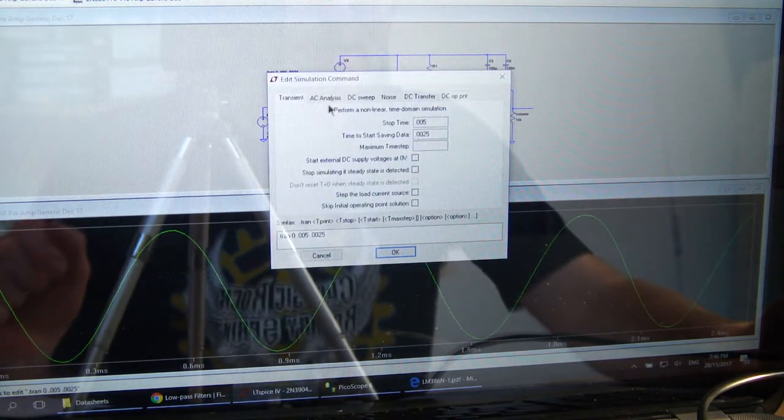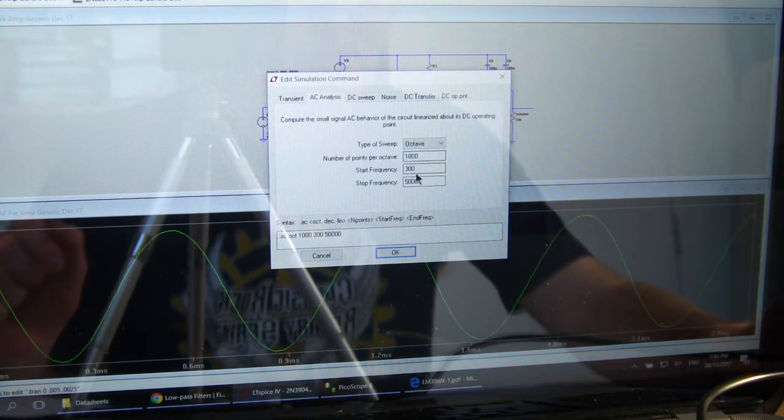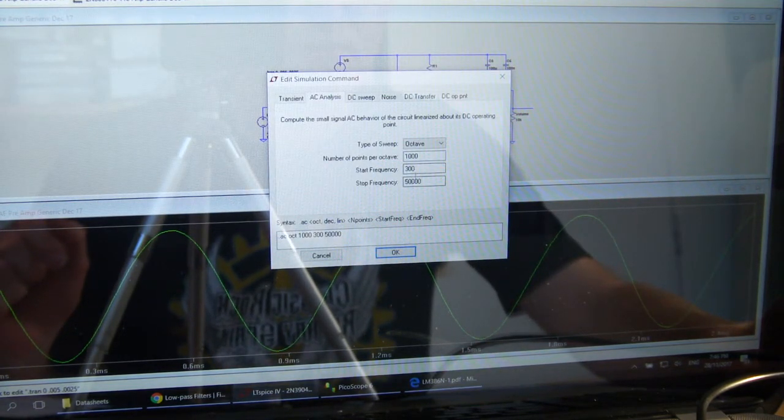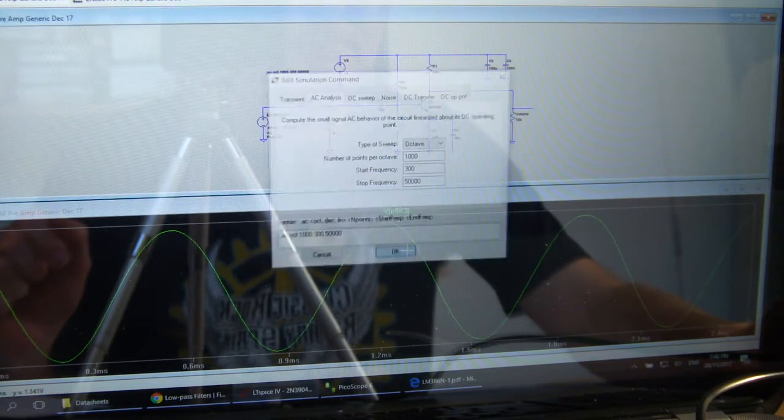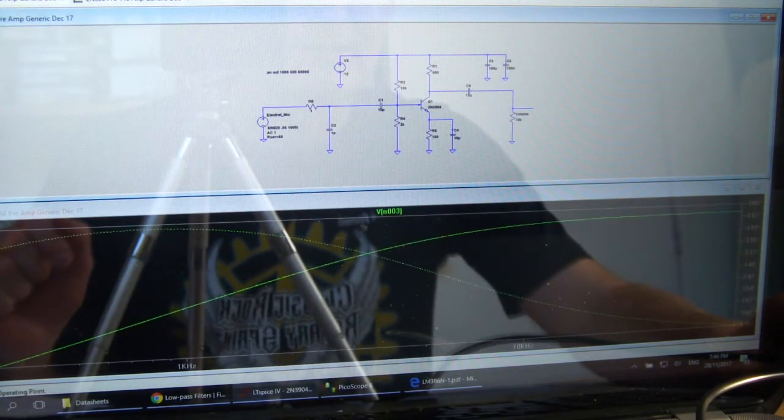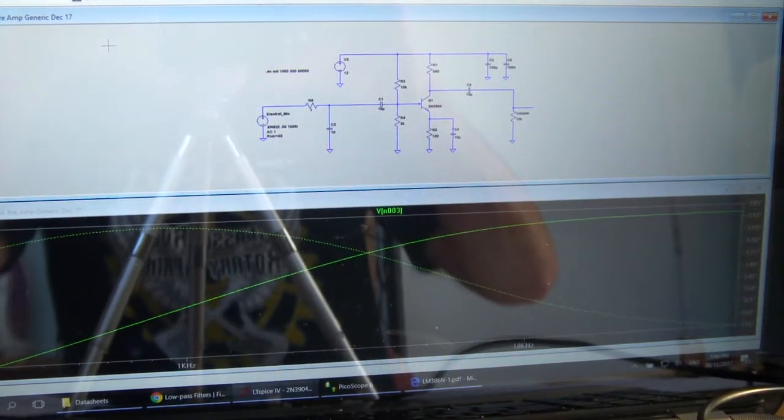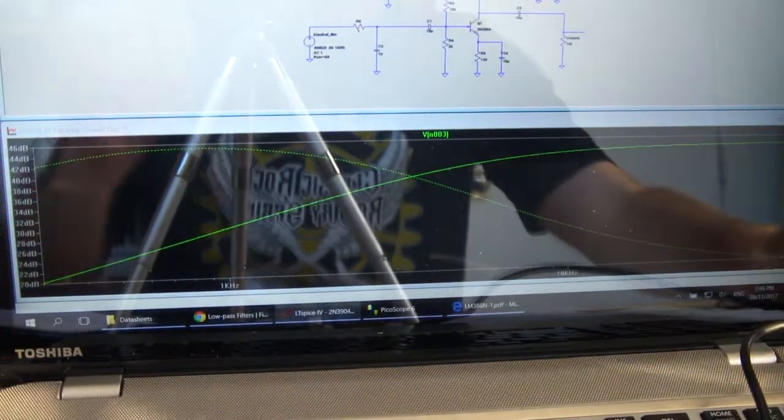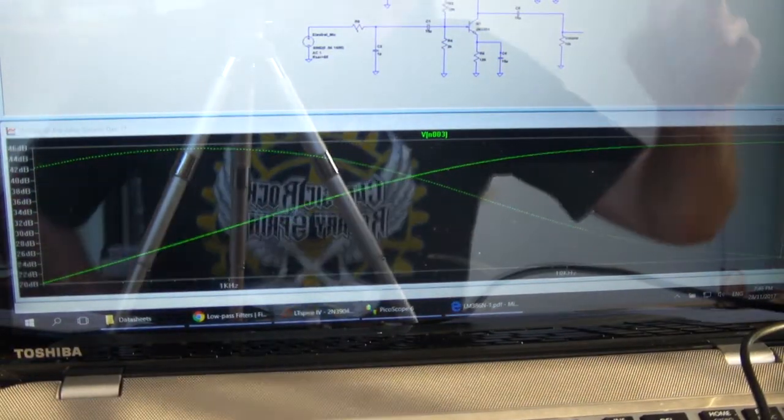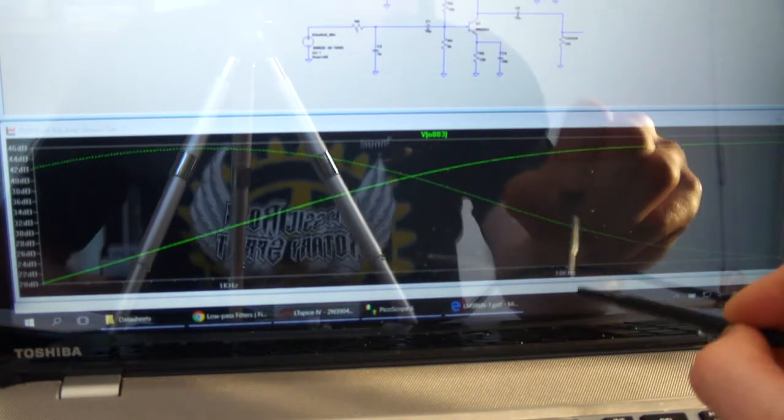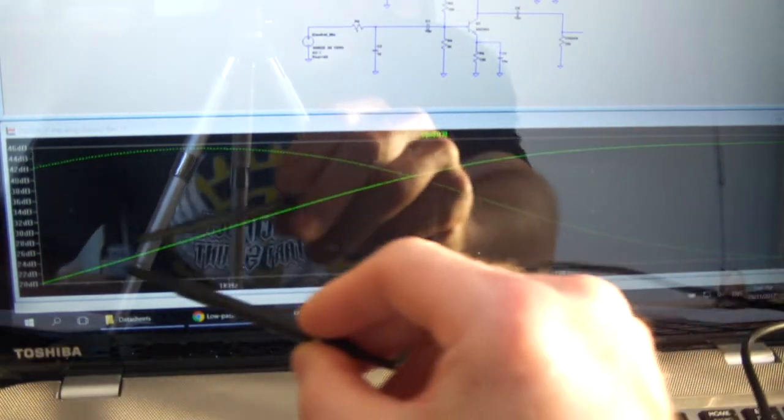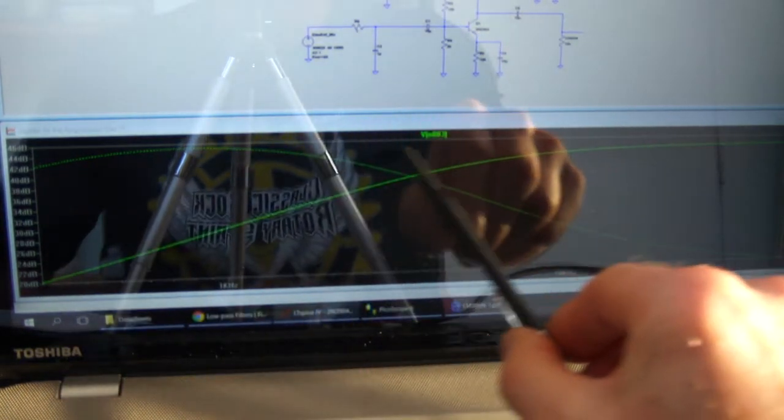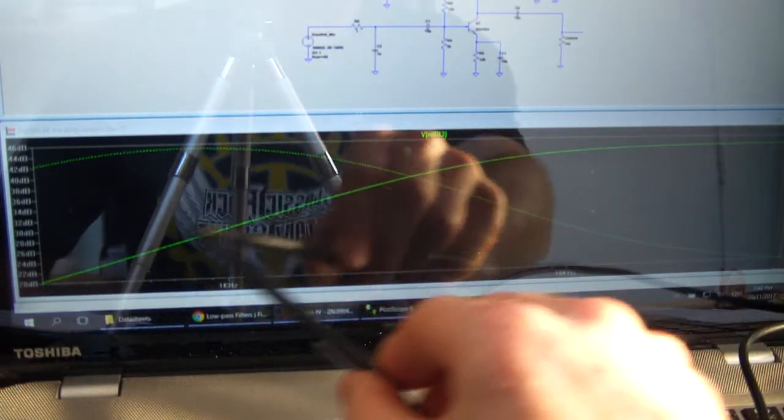Now we're just looking at the frequency domain, AC analysis. We'll start at 300 hertz and we'll go up to 50 kilohertz. And if we simulate that, we can now see our frequency plot down there. So at this point here that's 10 kilohertz, and way down here is 300. So it's very much got a high frequency response.